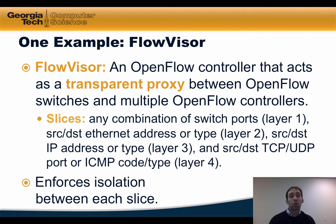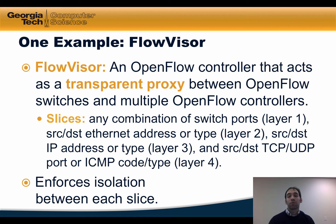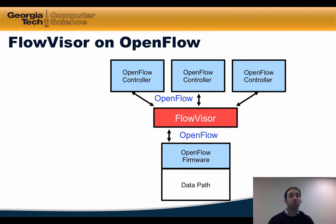One example of an SDN controller that slices the network is called FlowVisor. FlowVisor is an OpenFlow controller that acts as a transparent proxy between OpenFlow switches and multiple OpenFlow controllers that might be controlling the network. FlowVisor acts as the slicing layer that enforces isolation between each slice, sitting between multiple OpenFlow controllers operating in the control plane and OpenFlow-enabled switches in the data plane.